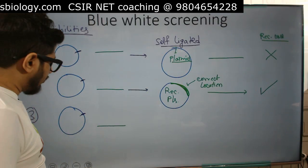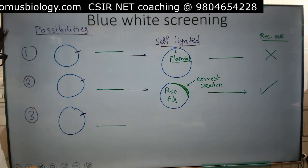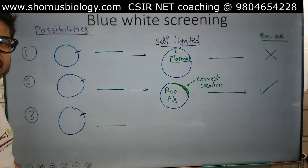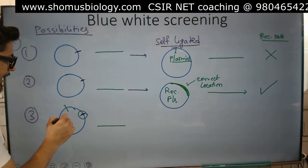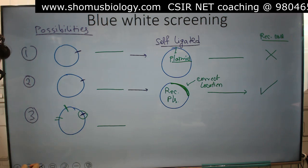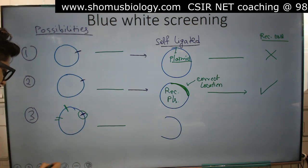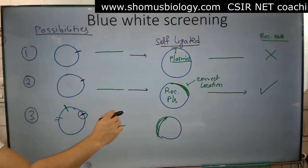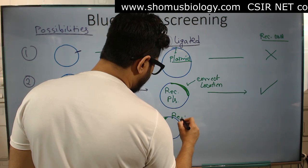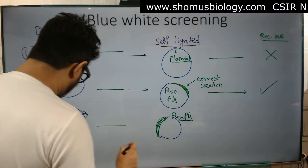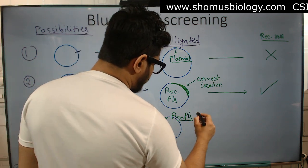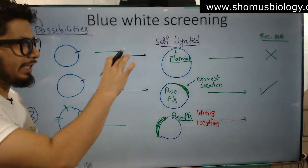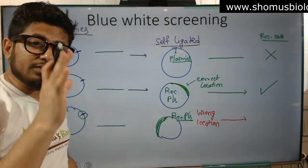The third scenario: we use the restriction enzyme, we cut the plasmid, we add the target DNA, but the target DNA fails to insert itself in the target location. Instead, it cuts someplace else, and the target DNA is inserted in a totally different location. This is also a recombinant plasmid, but it is not the desired entry — it is an entry in the wrong location, so it is the wrong recombinant.